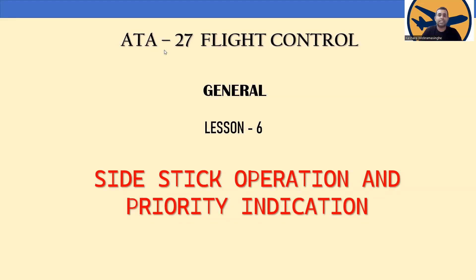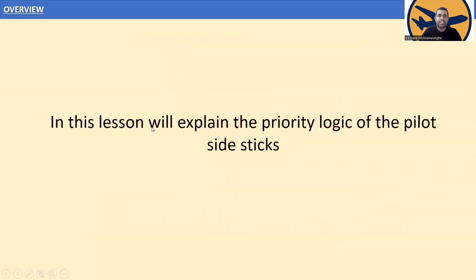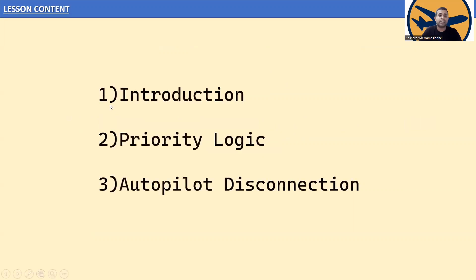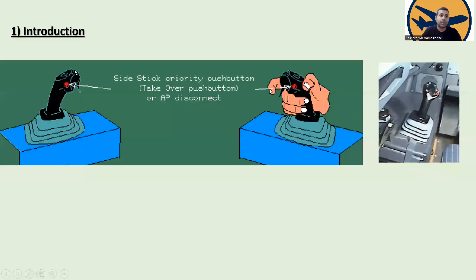ATA Chapter 27 Flight Controls General, Lesson Number 6: Side Stick Operation and Priority Indication. In this lesson we'll explain the priority logic of the pilot side sticks. The lesson content covers three topics: first, the introduction; second, the priority logic; and third, autopilot disconnection.